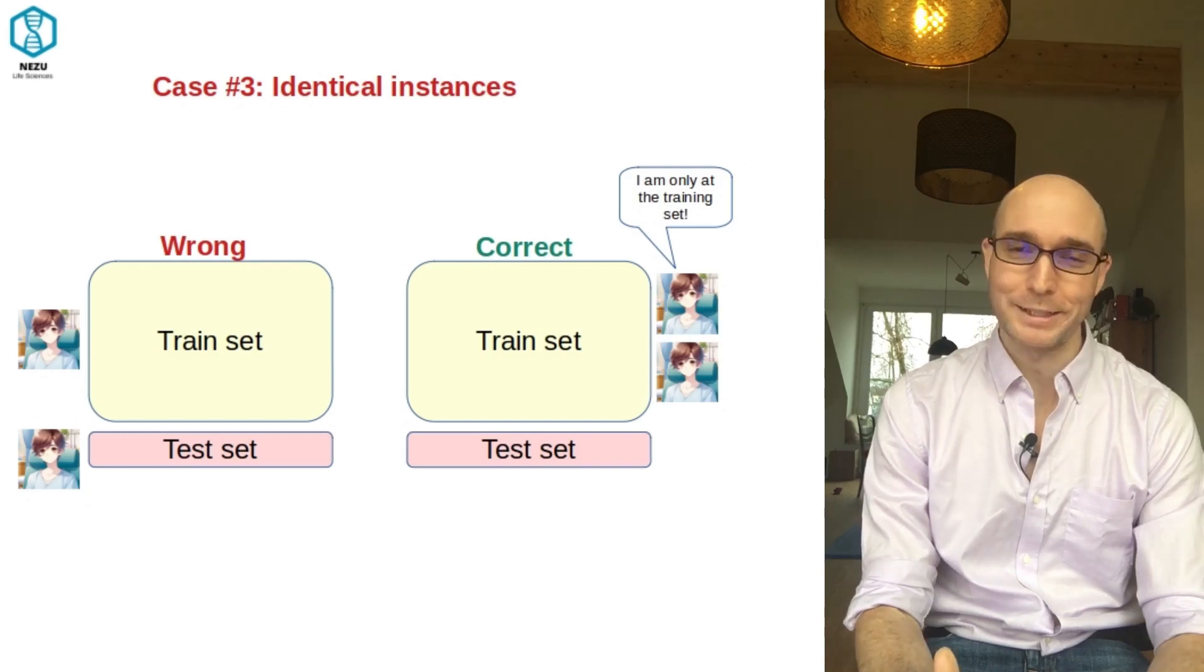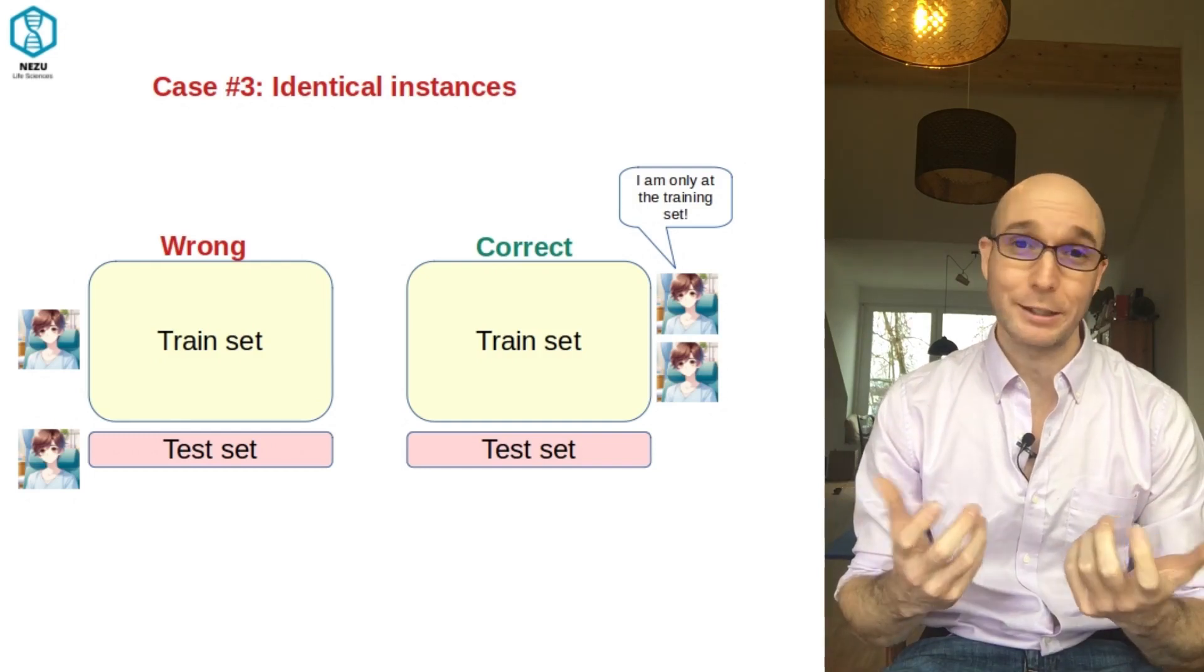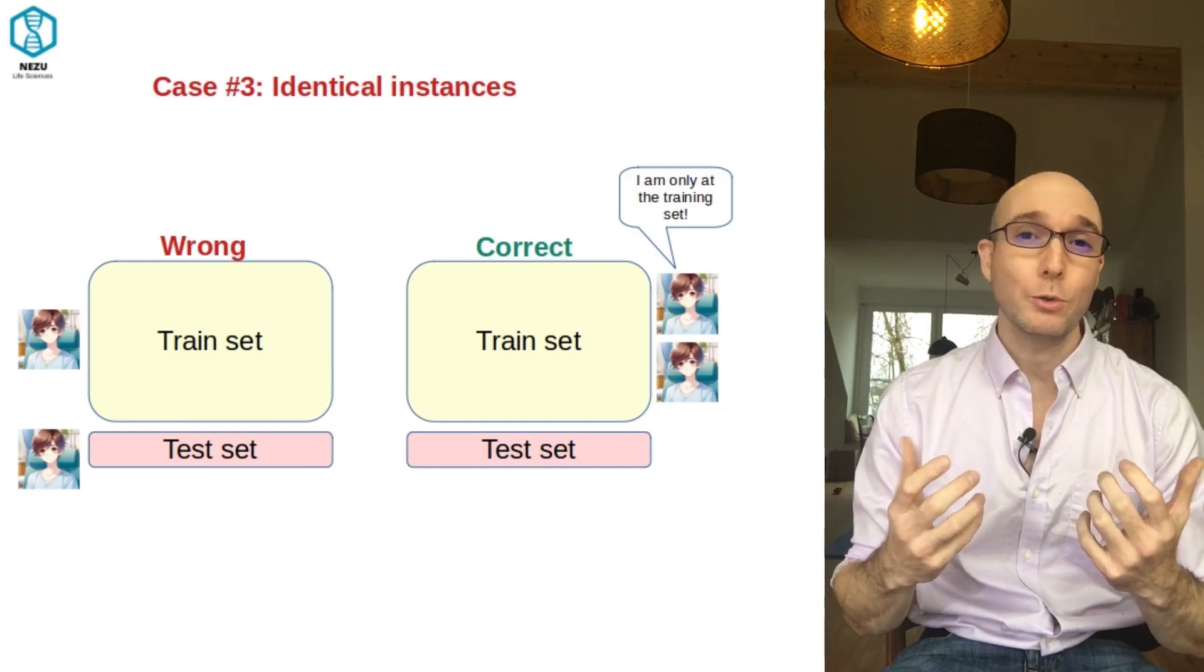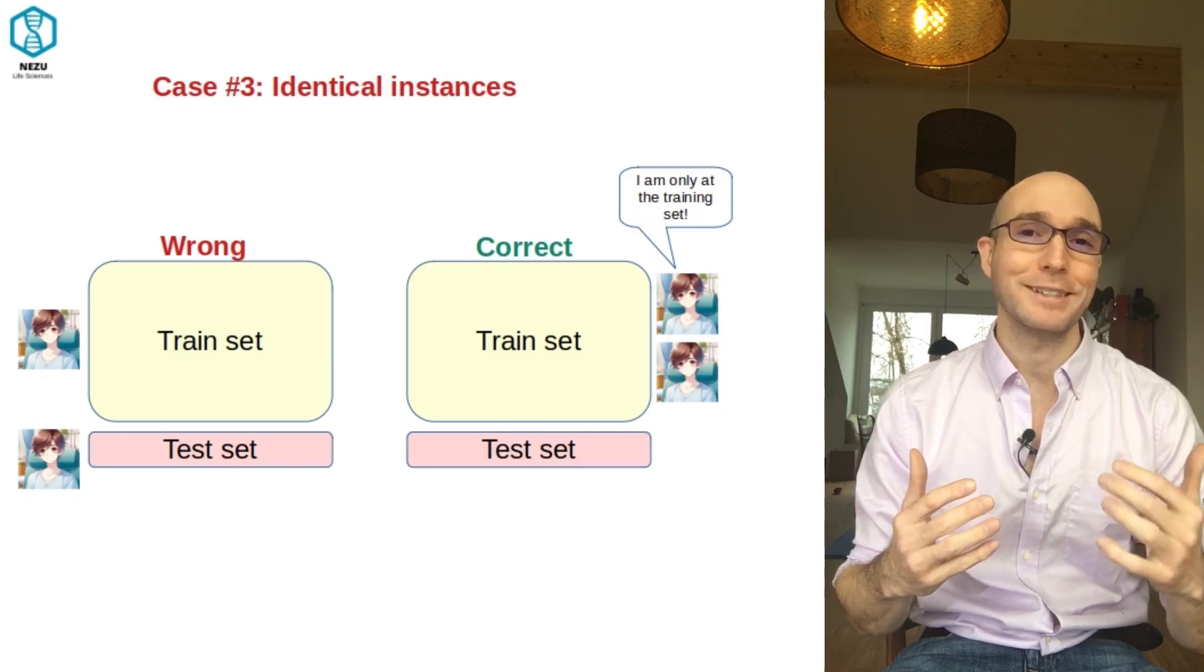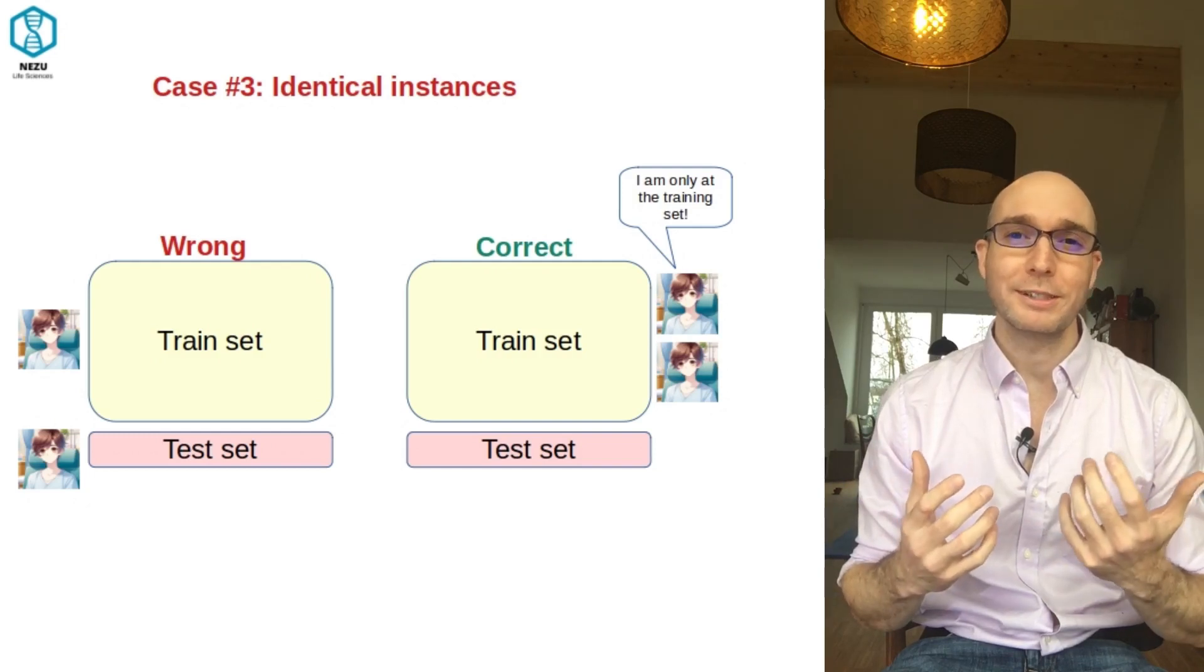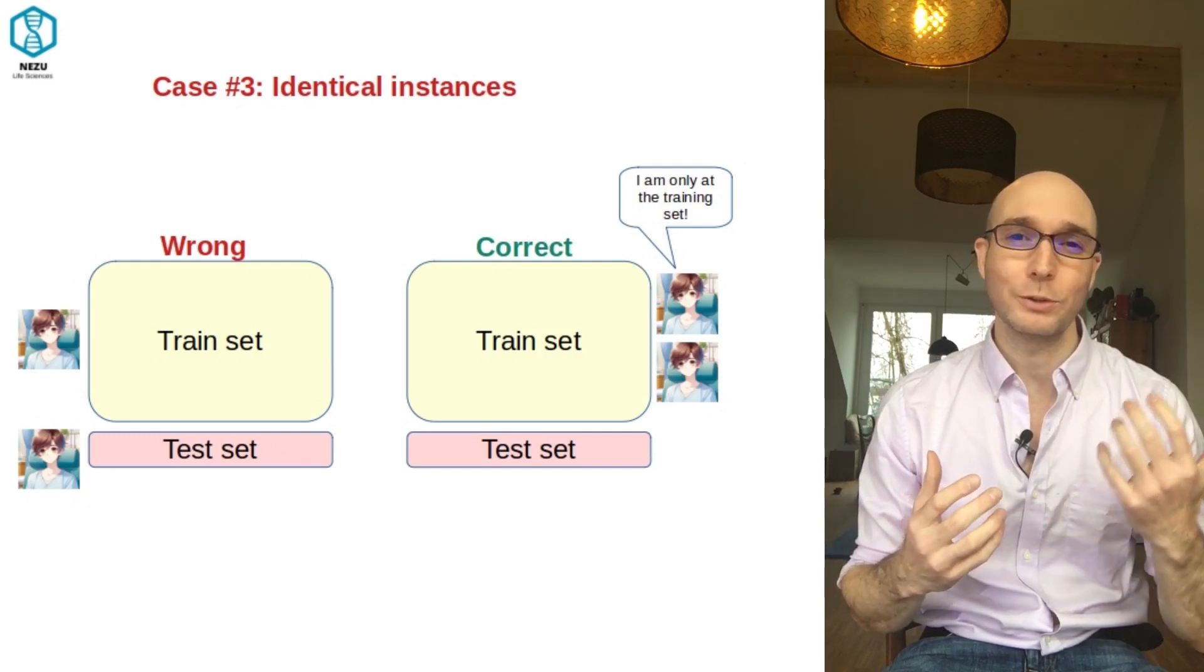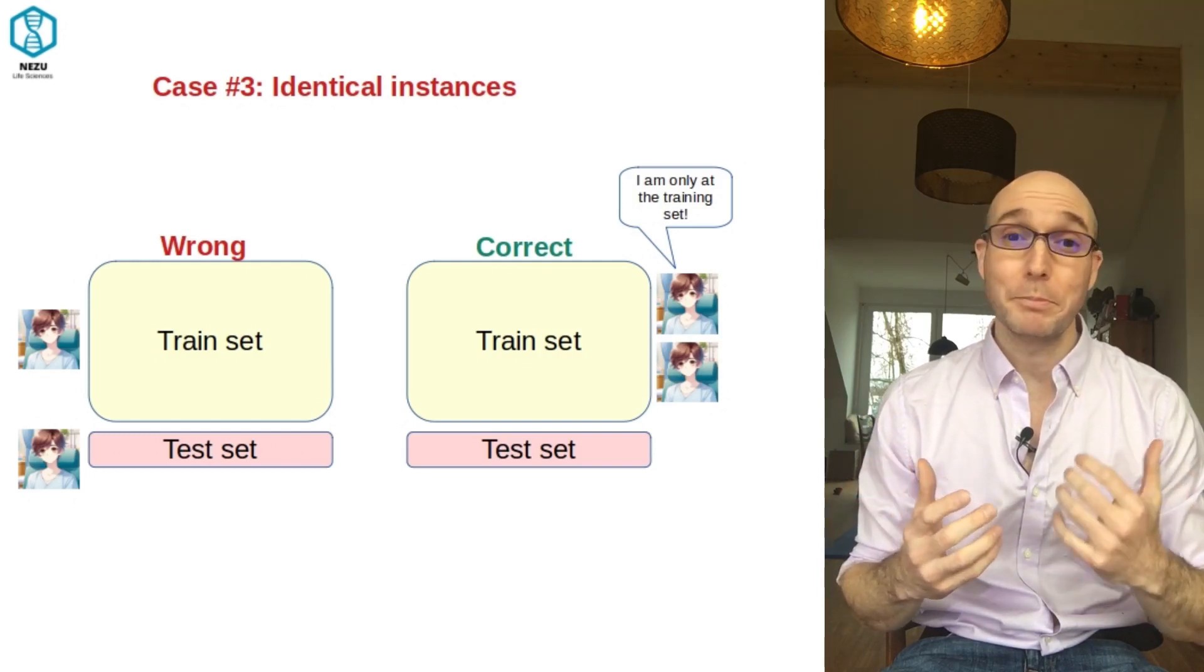And here's point number three: incorrect data splits. This kind of leakage can also happen if you split your data incorrectly. This is common in data sets where we have multiple copies of the same instance. For example, in medical data, if records of the same patient are present in both the training and the test set, the model might be simply memorizing patient-specific information instead of actually learning the patterns that it can use to generalize later.